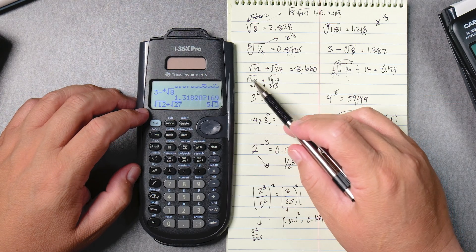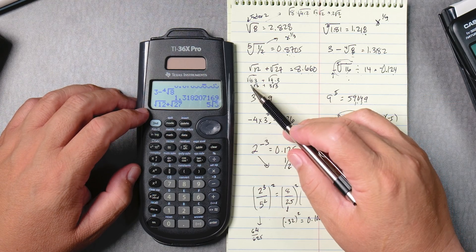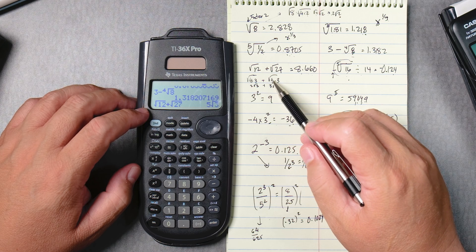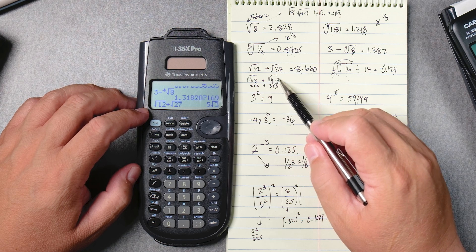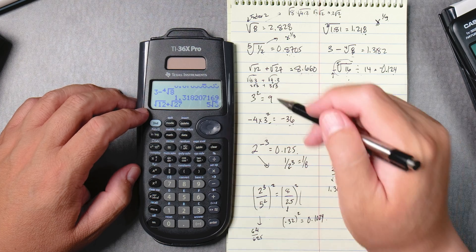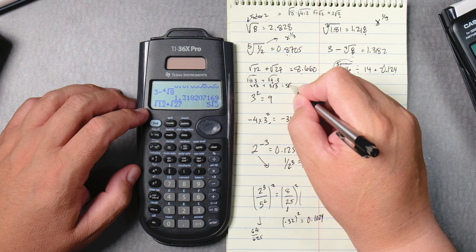Why? Because 12 is 4 times 3, square root of 4 is 2, square root of 3, 27 is 9 times 3, square root of 9 is 3, square root of 3. The radicals are the same, you add the numbers, and it gives you 5 square root of 3.